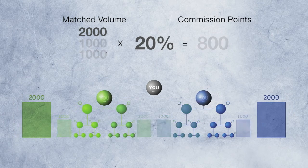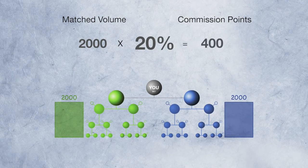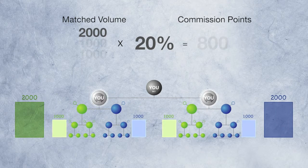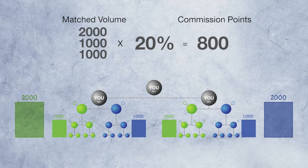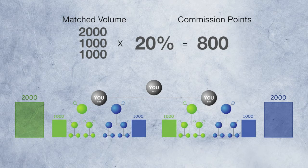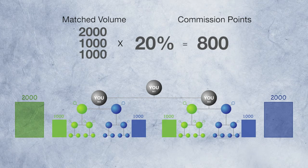If you only had one business center and the same sales volume, you would only earn 400 commission points. With three business centers, you're earning twice as much. Remember, we're talking double the commission with the same sales volume in your organization. This huge increase in income potential is why the most successful people in USANA start out with three business centers.